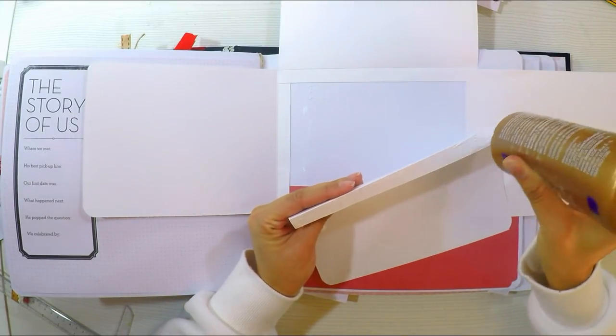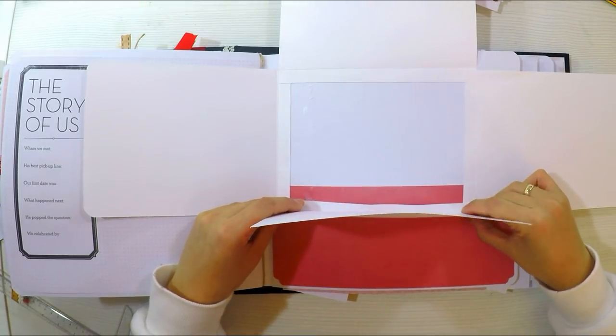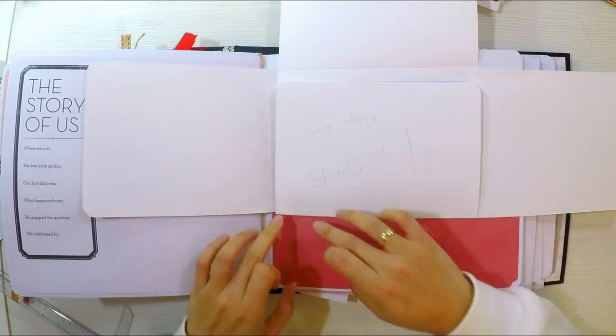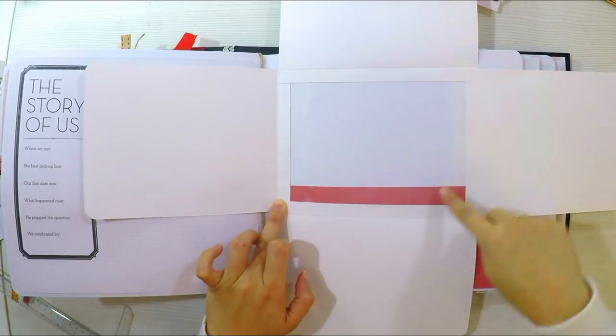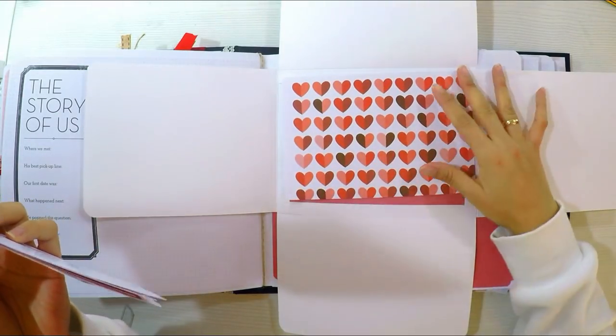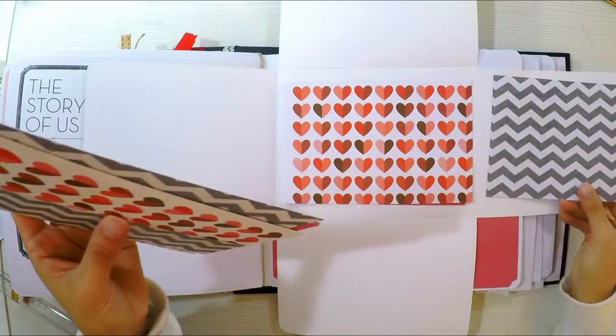Por lo tanto es importante que las solapitas, todas las cartulinas miden lo mismo, 20 por 15 centímetros. Pero las solapitas tenemos que tener cuidado que dos de ellas van a ir a lo horizontal y dos a lo vertical. Lo que tengo que hacer ahora básicamente es cubrir todas estas solapas, que era lo que les decía al principio, con un papel decorado o con una misma cartulina blanca.